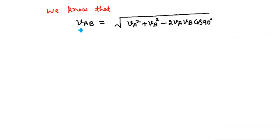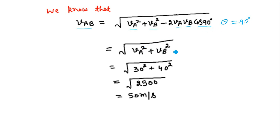The magnitude of relative velocity is given as: VAB equals square root of VA squared plus VB squared minus 2·VA·VB·cos θ. But theta here is 90 degrees, and cos 90° is 0. So the expression simplifies to the square root of VA squared plus VB squared. Putting in the values of VA and VB, we finally get the answer as 50 meter per second. Therefore the magnitude of relative velocity of car A with respect to car B is 50 meter per second.